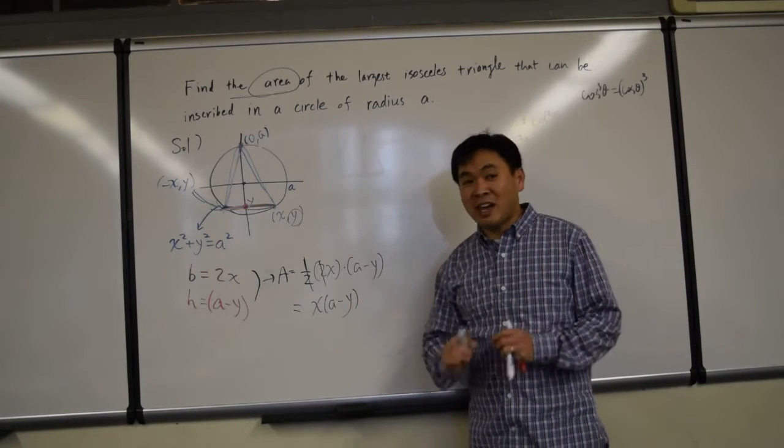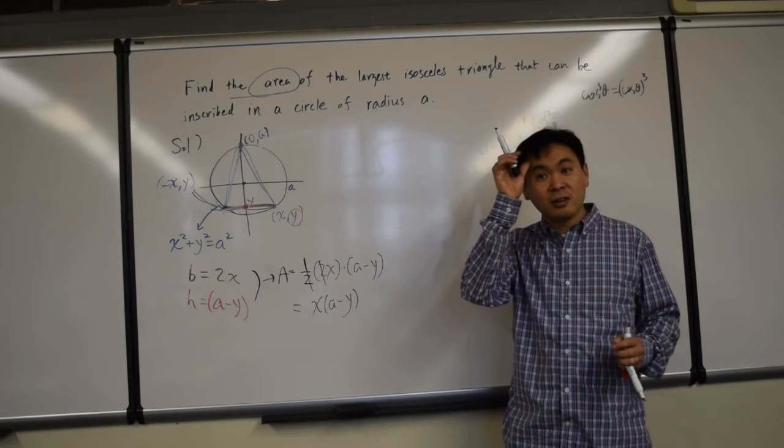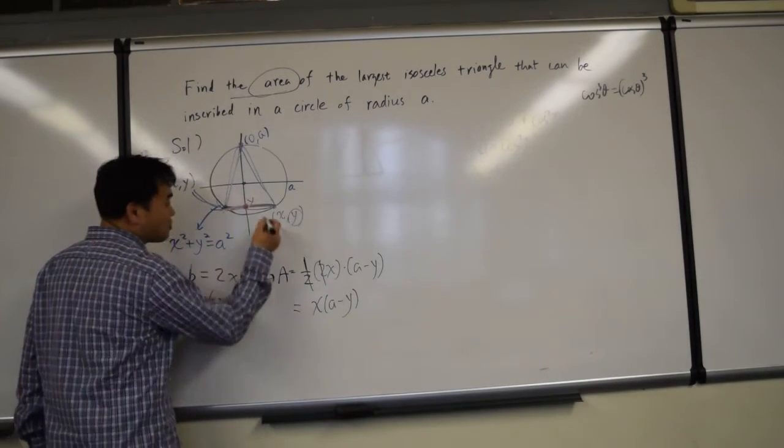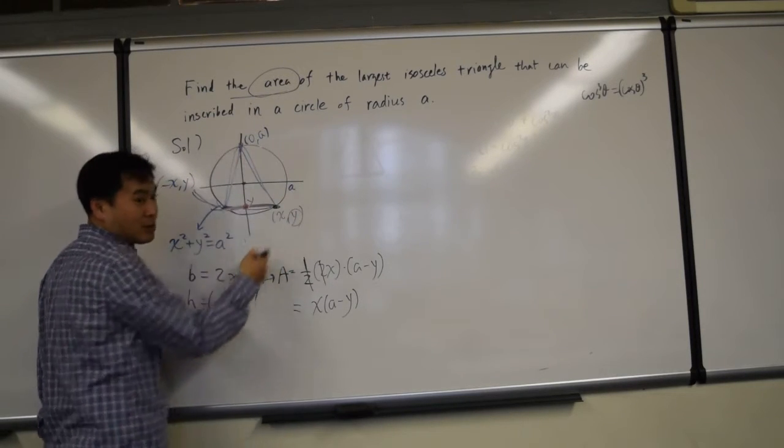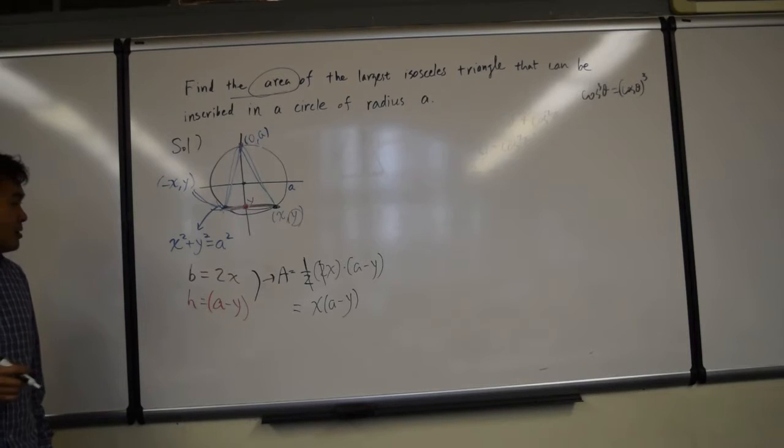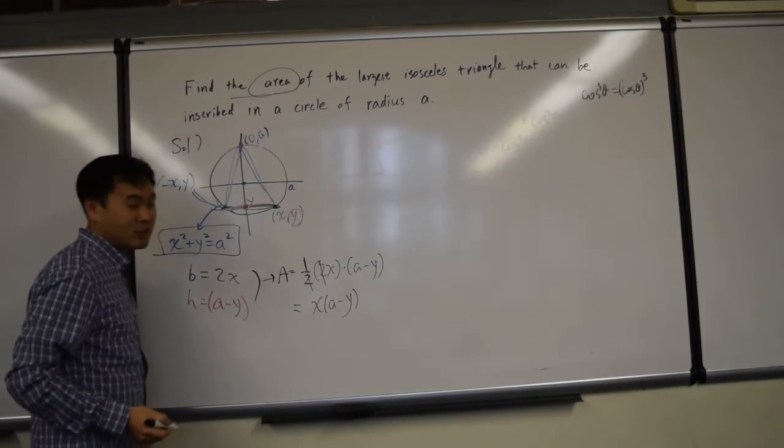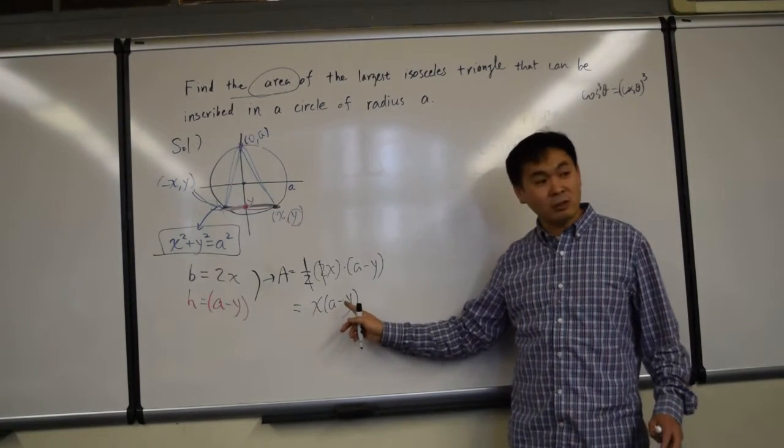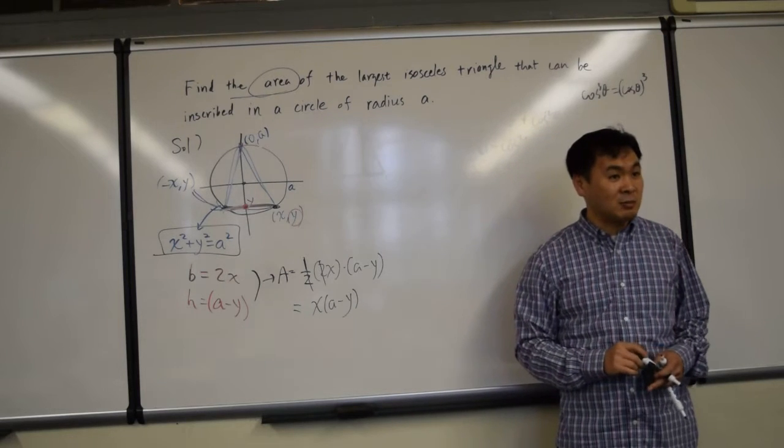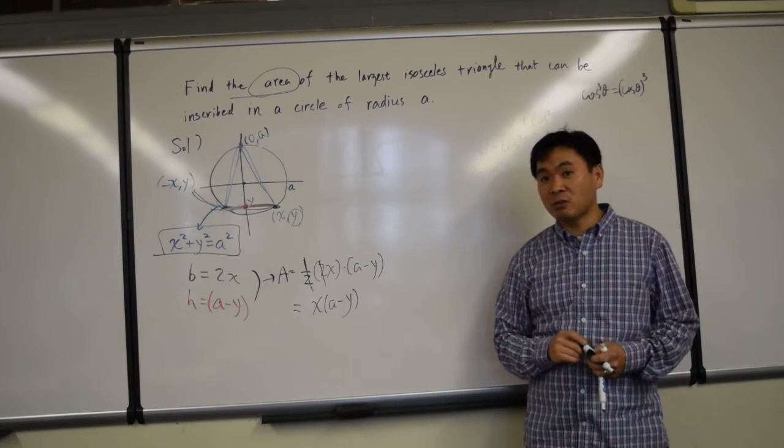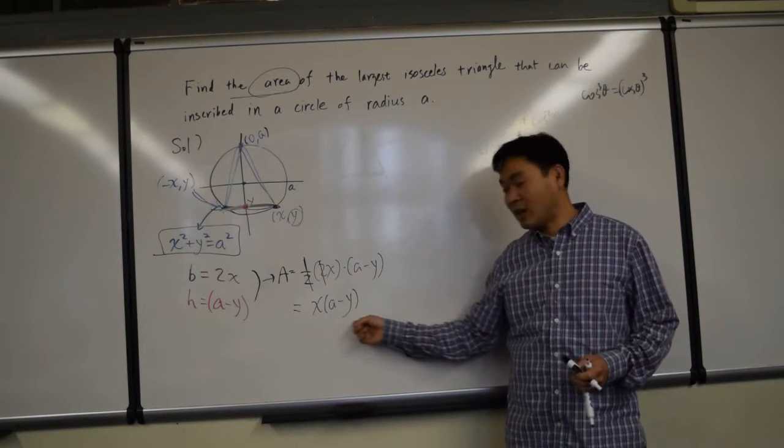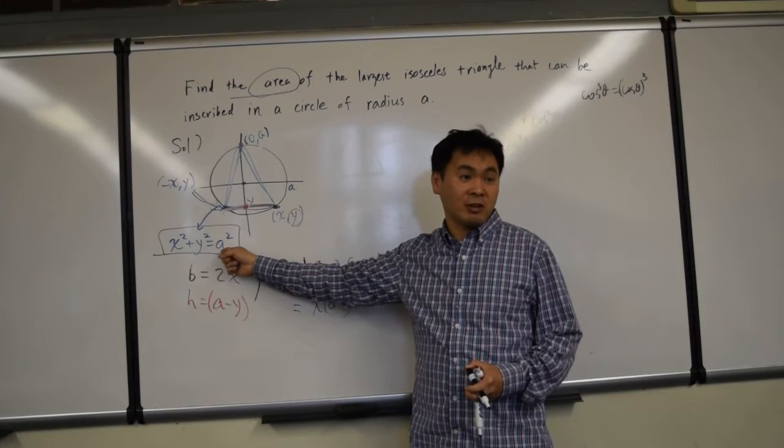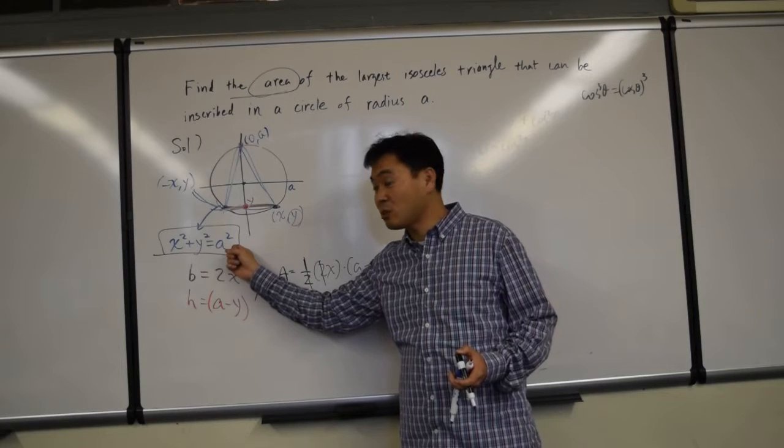Now, can x and y be any number? It has to be on this curve, right? X comma y has to be on this curve. What does that mean? It has to satisfy this equation x squared plus y squared equals a squared. So now do you see the constraint and your target? What's the target? What are you trying to maximize or minimize? We're trying to maximize the area which is x times a minus y. That's your target. What's the constraint? This equation. Constraint is always an equation, x squared plus y squared is equal to a squared.